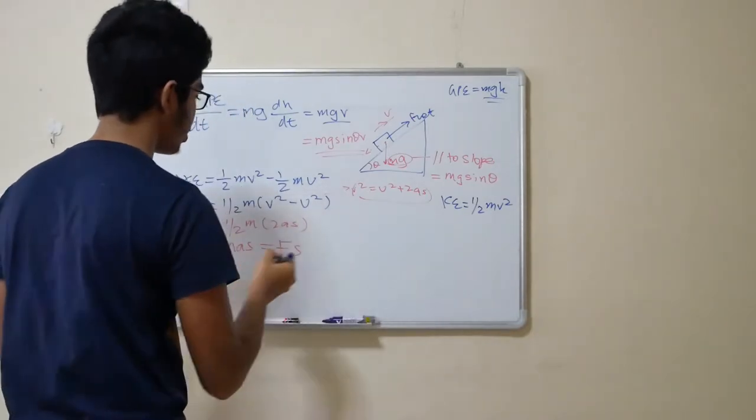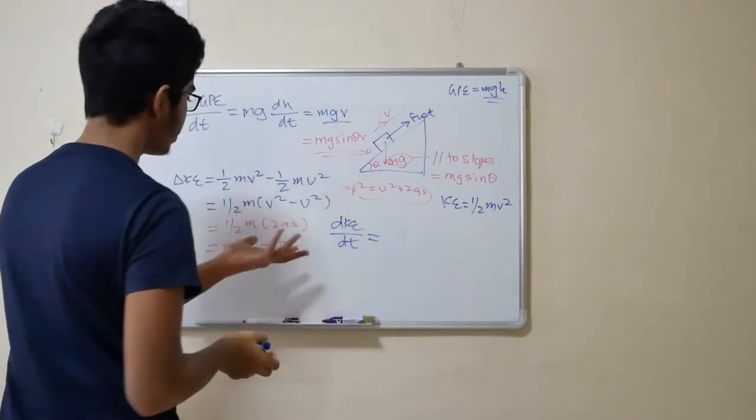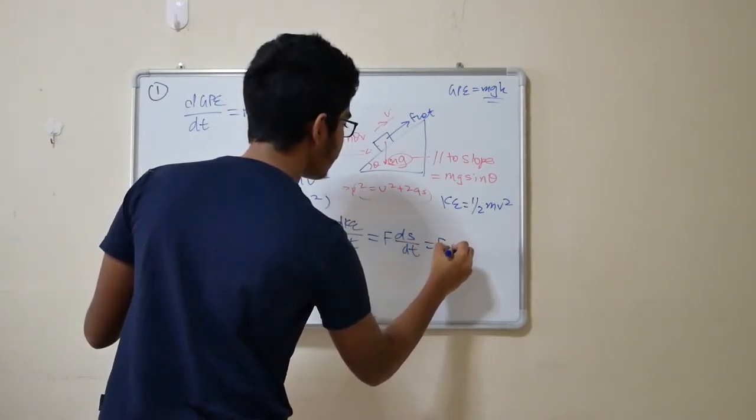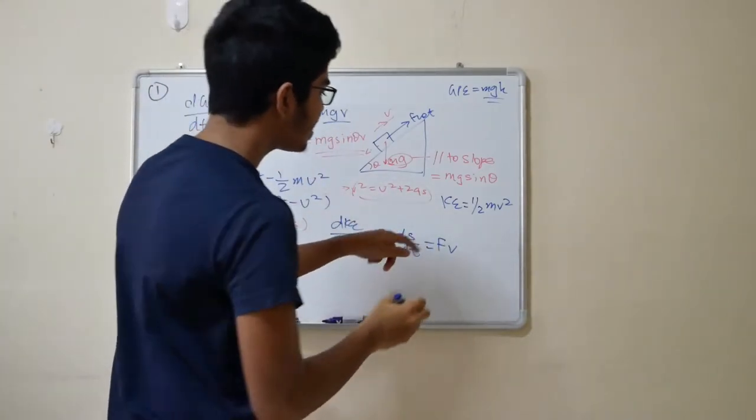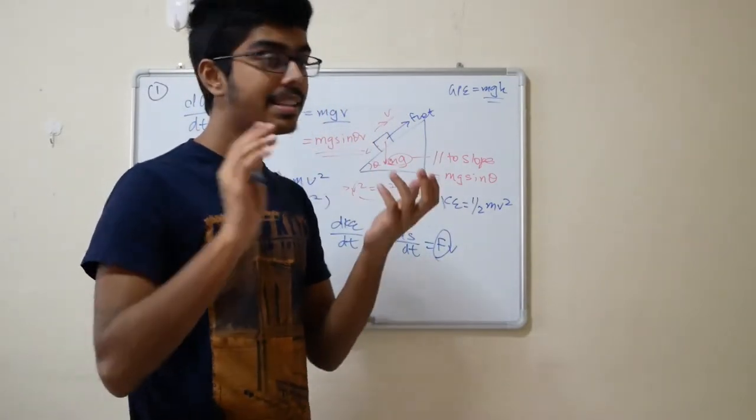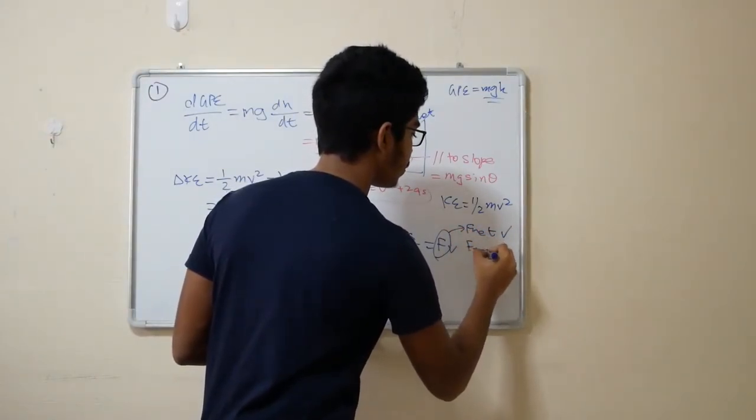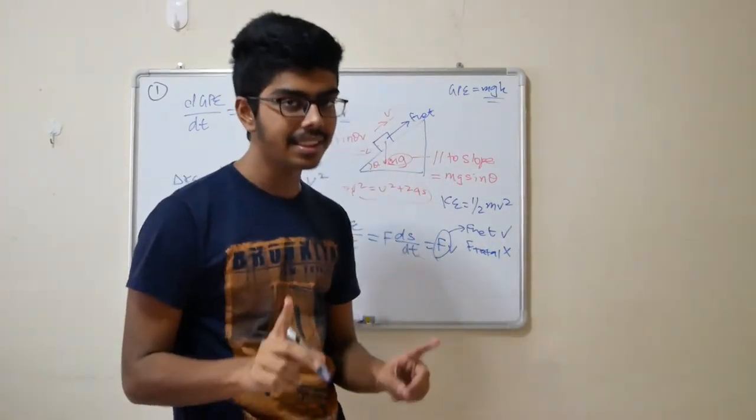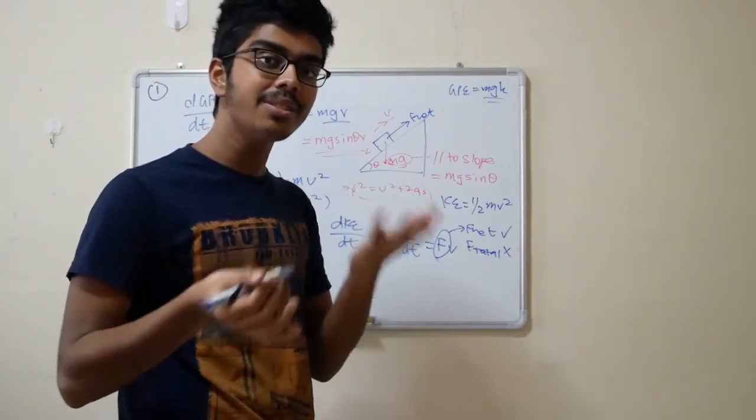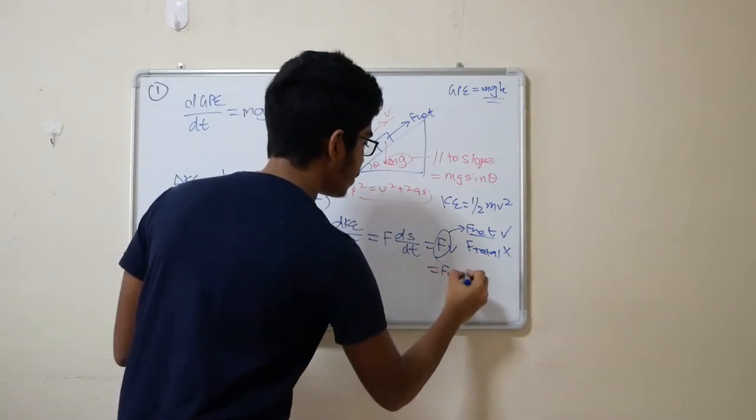You can substitute this in and you'll get half m times 2as which equals mas. ma is F, so it's Fs. Now if you differentiate dKE over dt, you will get the change in kinetic energy over time, which is F dS over dt which equals Fv. But what is this F right here? Is it the total force or the net force? It is the net force, guys. Because that net force is the thing that causes the box to accelerate. The total force doesn't because you're ignoring the resistive force. So don't use F total, use F net v.